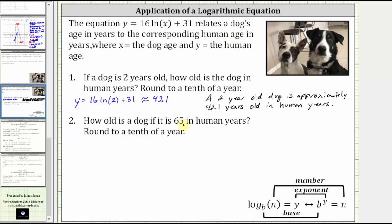So to set this up, we substitute 65 for y, which gives us 65 is equal to 16 times natural log x plus 31.